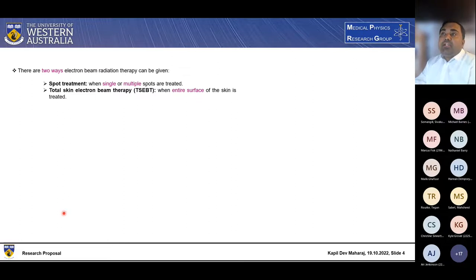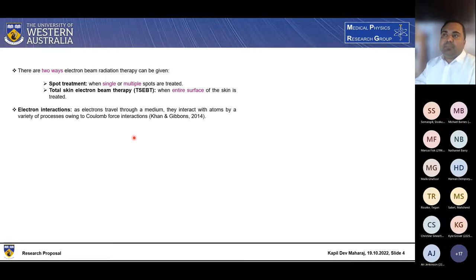So there are two ways electron beam radiation therapy can be given. One is spot treatment, and another is total skin electron beam therapy. In spot treatment, we only treat single or multiple spots. And in total skin electron beam therapy, we treat the entire surface of the skin.